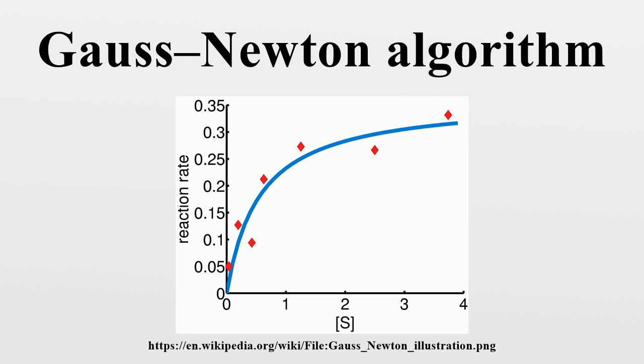The so-called Marquardt parameter may also be optimized by a line search. But this is inefficient as the shift vector must be recalculated every time is changed.